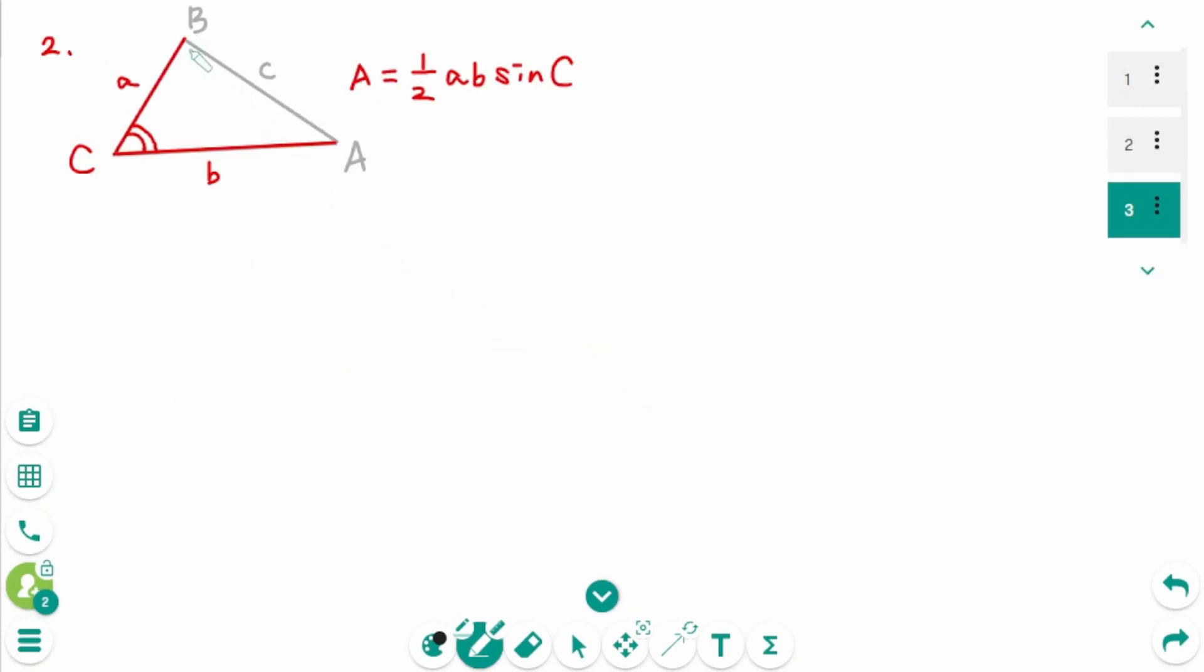Number 2, when we know the SAS, the side, angle, side, in triangle ABC, the formula is 1 over 2 times A times B times sine C.